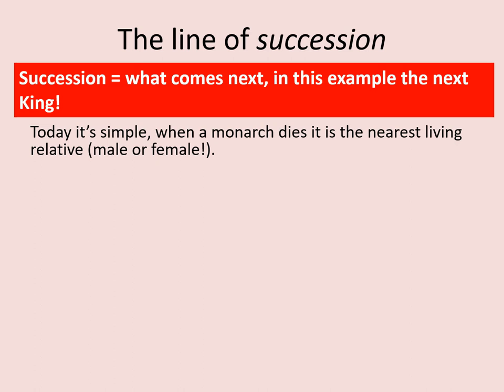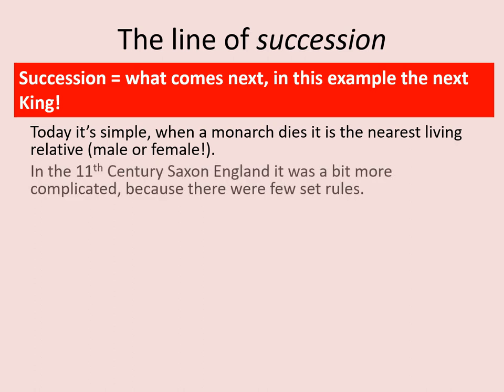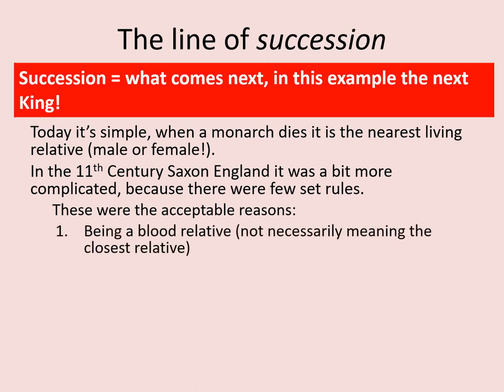For example, when Queen Elizabeth II dies, the current plan is that Charles, Prince Charles, her eldest son, would take over as king. In the 11th century, Saxon England had it a little bit more complicated because there were few set rules. All of these things could be acceptable reasons to be an heir to the throne.